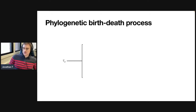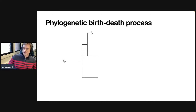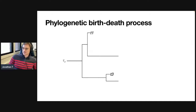Let me give a visual illustration. We start at some origin time tau-naught and run the process forward in time. The process bifurcates at rate lambda, and death occurs at rate mu — death meaning one of the lineages terminates into a terminal node or leaf. We continue this process forward: lineages give birth a couple more times, t3 dies, and we continue until we get something that looks like a phylogeny. It's not ultrametric yet.